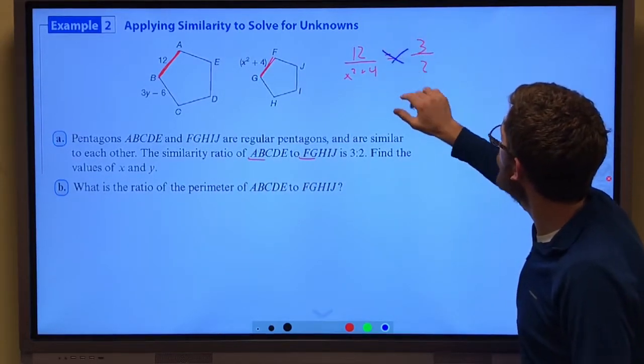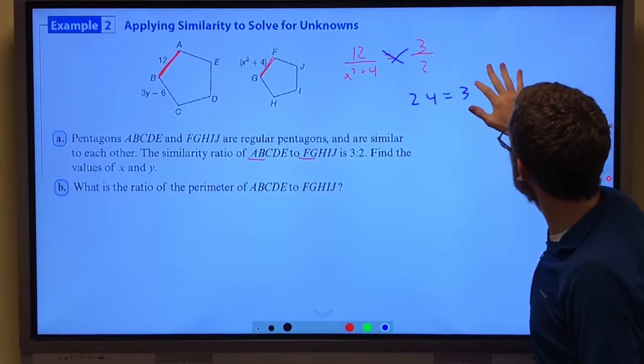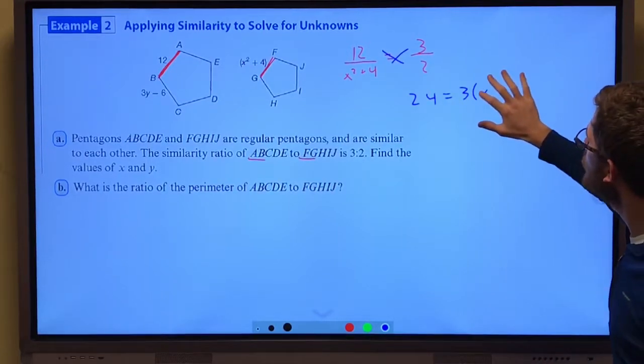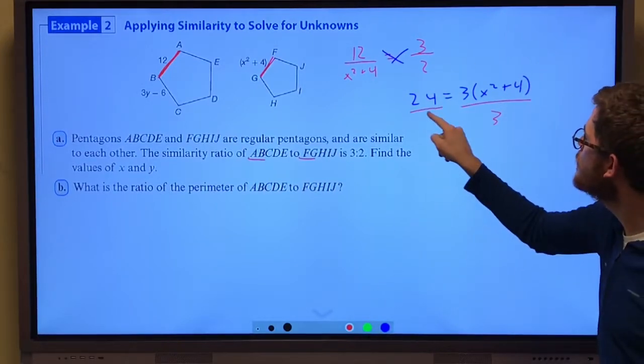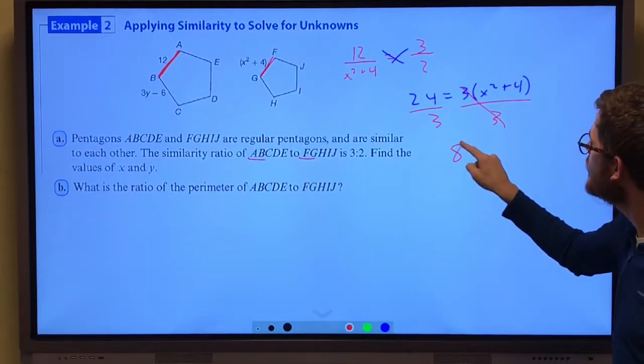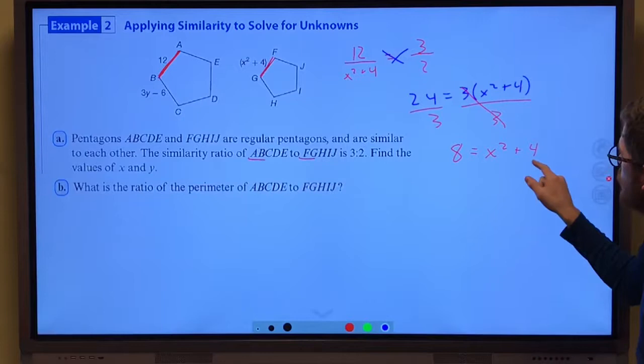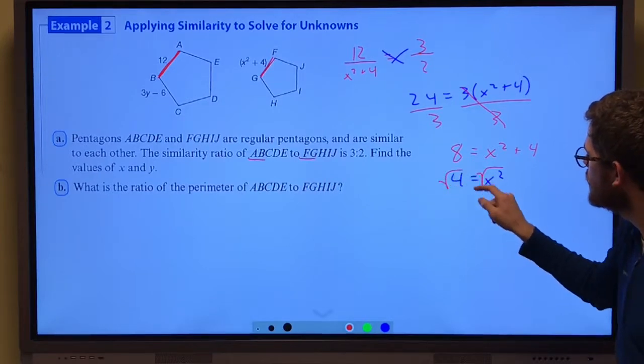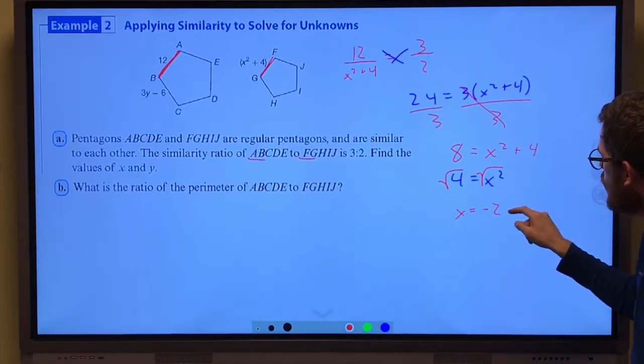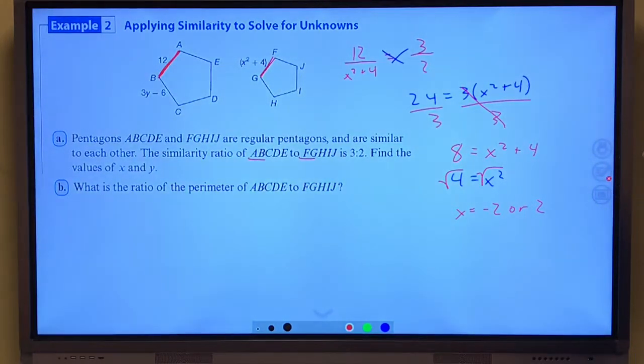Two times twelve is twenty four equals three. I'm going to be a little crafty here. Three times x squared plus four. Instead of distributing it, instead I'm going to divide both sides by three to get eight equals x squared plus four. Subtract four from both sides. Four equals x squared. When we take the square root of both sides, x could equal a negative two or a positive two. It could equal either one.